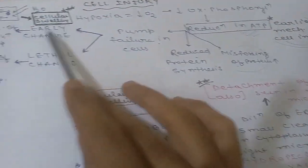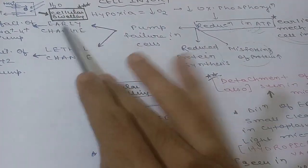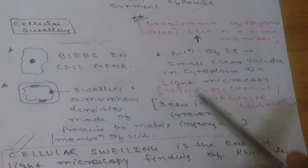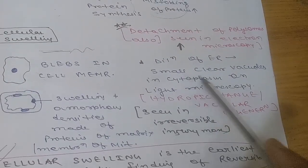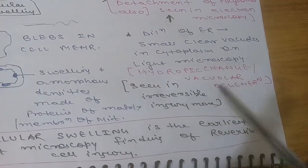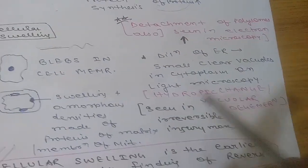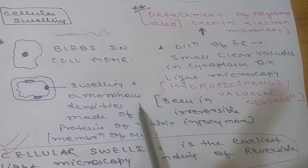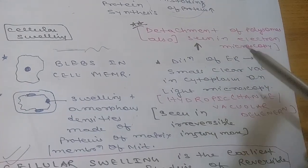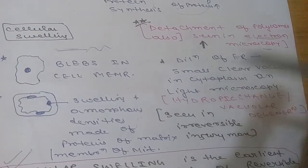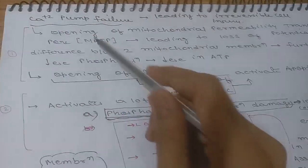Blebs form in the cell membrane due to increased water inside the cell. Amorphous densities made up of proteins in the mitochondrial matrix membrane are also seen. Dilation of the endoplasmic reticulum produces small clear vacuoles in the cytoplasm on light microscopy — this is an example of hydropic change or vacuolar degeneration. Detachment of ribosomes (polysomes) from the ER is seen on electron microscopy.